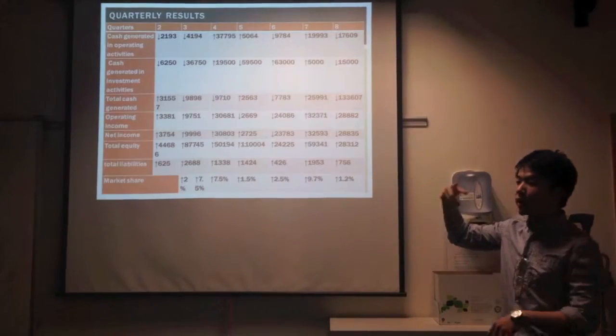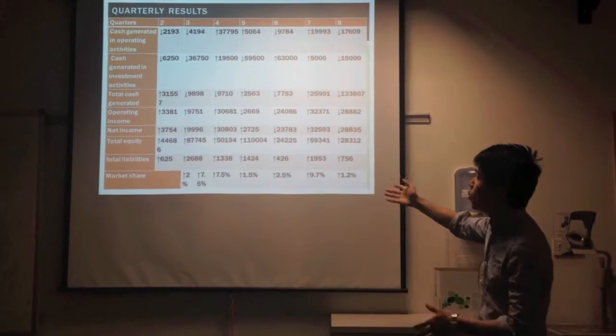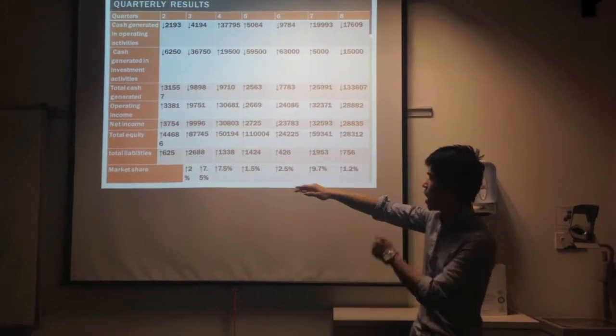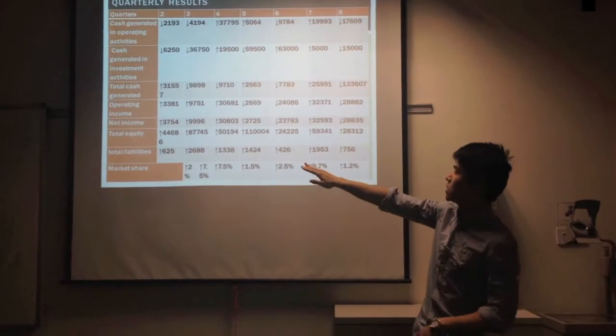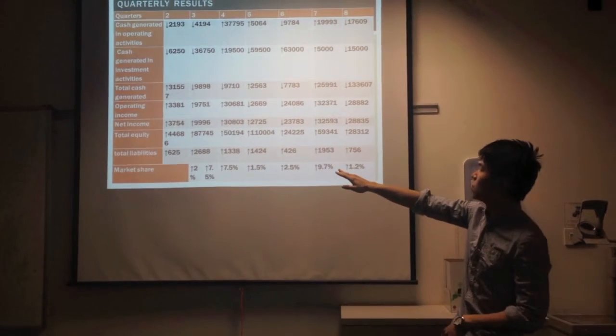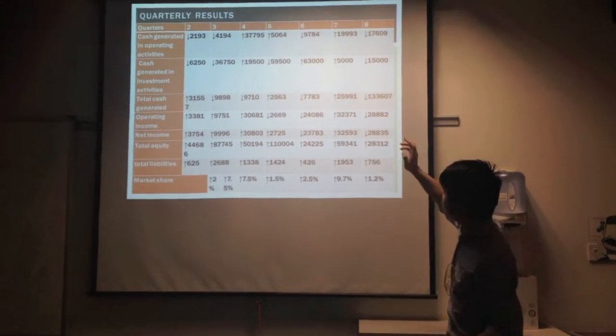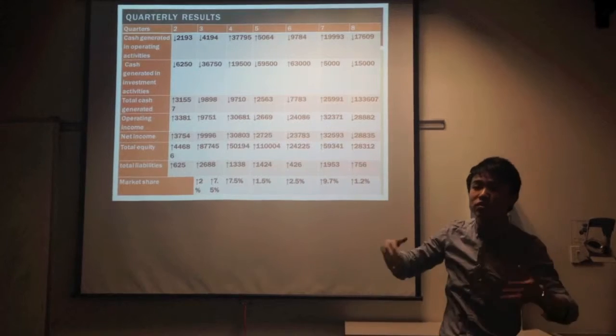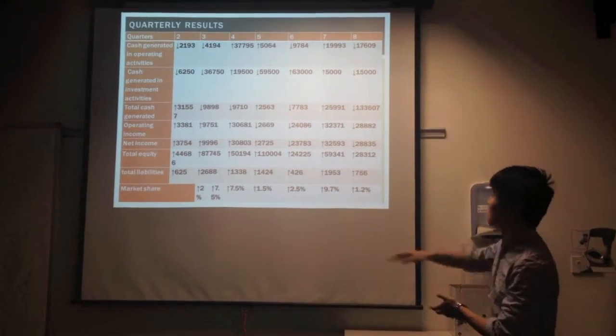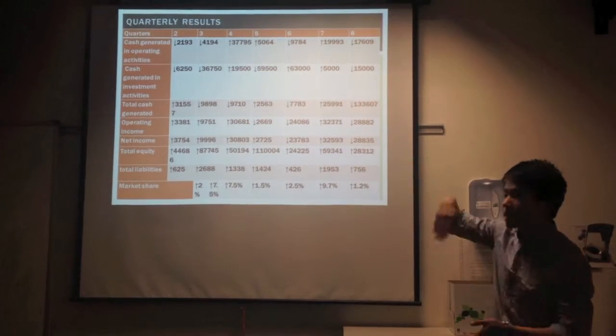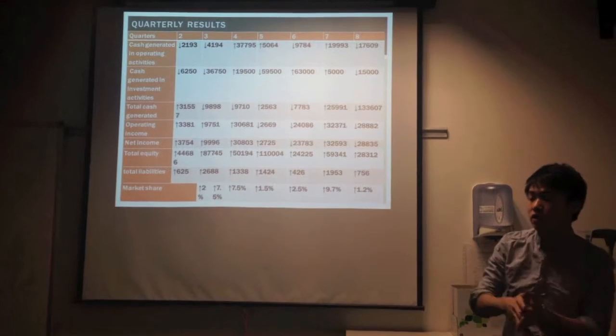Now I'll go to the quarterly results. Due to the limited scope of our report, I'll only mention net income and market share. First, you can see from the graph that net income increased until the sixth quarter, then declined due to excessive investment in promotion and advertising. In the eighth quarter, it dropped again because of too much investment in research and development and power plants.